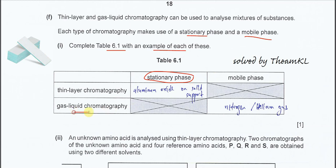For gas-liquid chromatography, because it's a gas, the mobile phase is the gas that we use. The gas must be inert, it cannot react with the reactant. That's why we use inert gas such as nitrogen and helium. Argon also can.